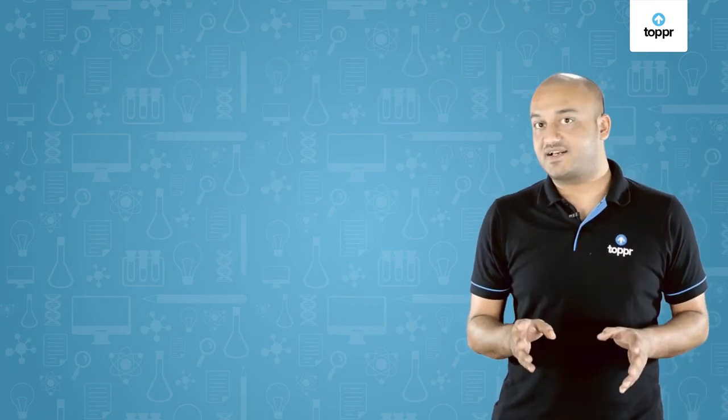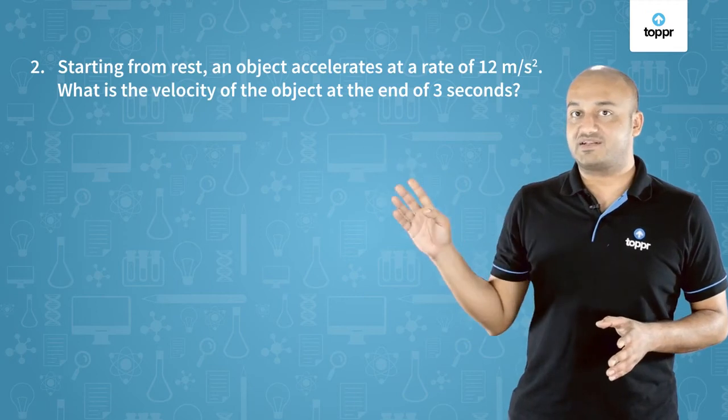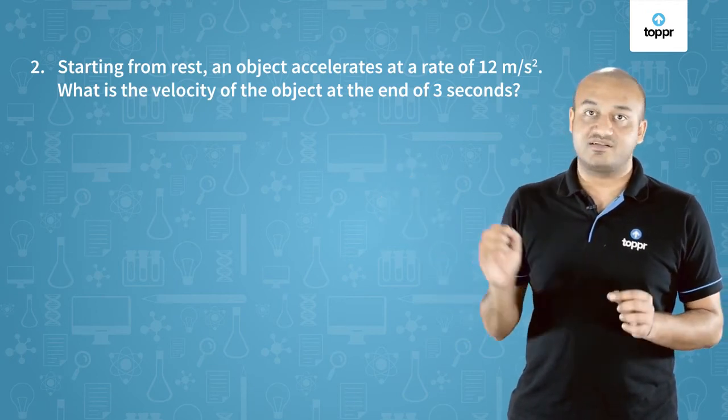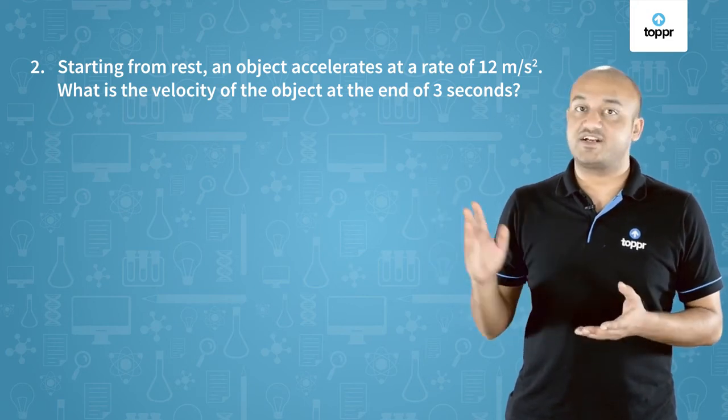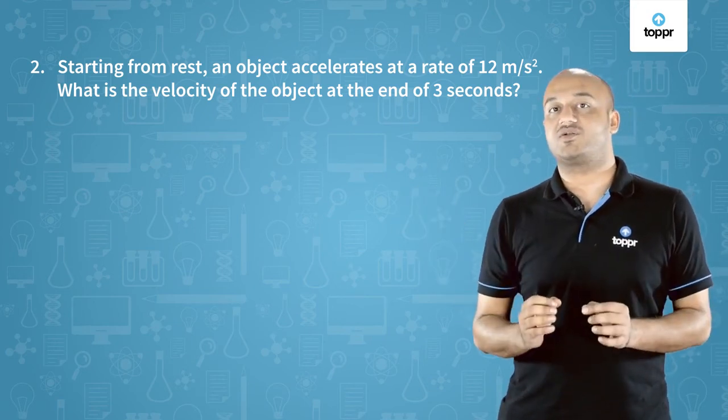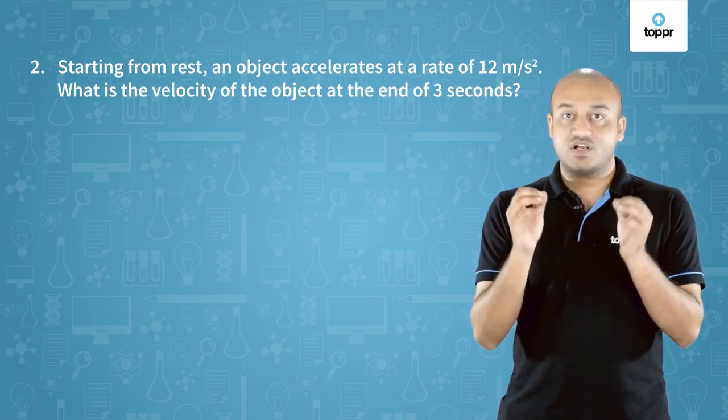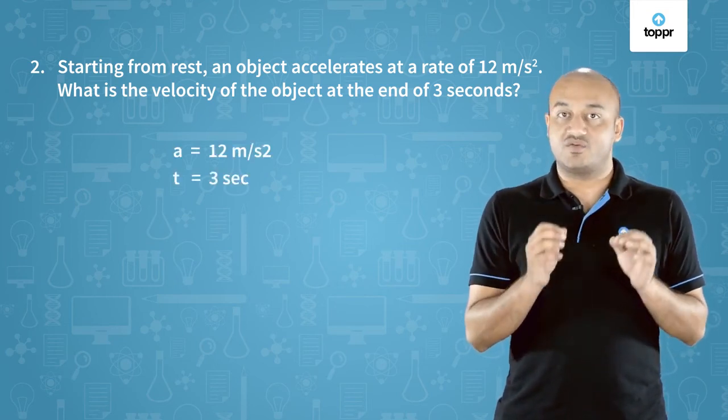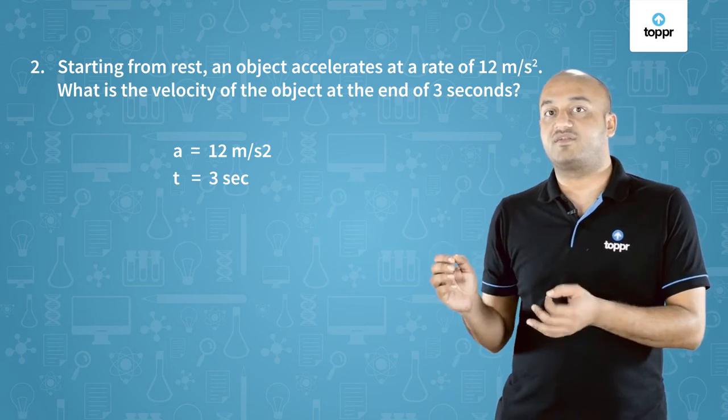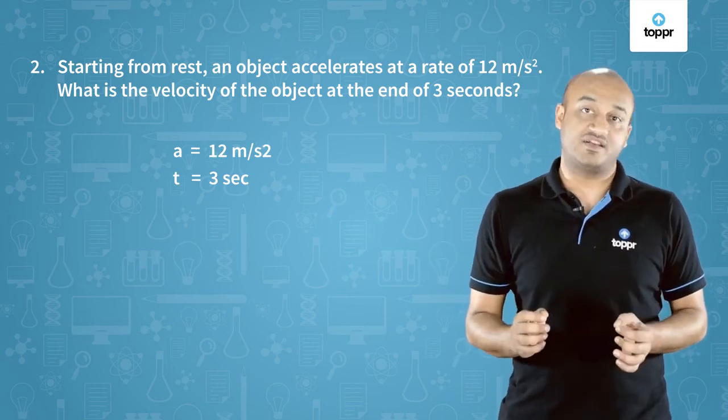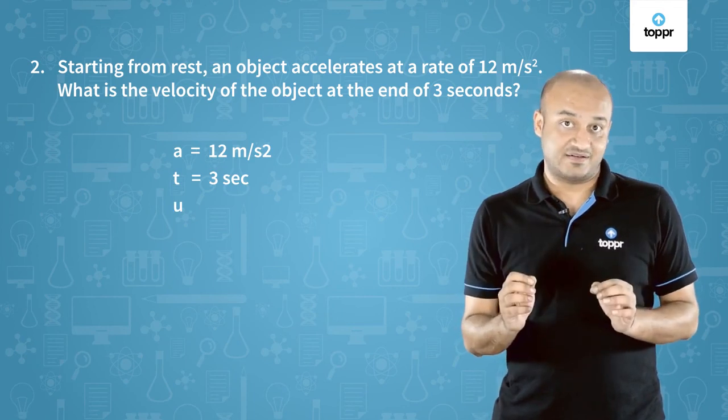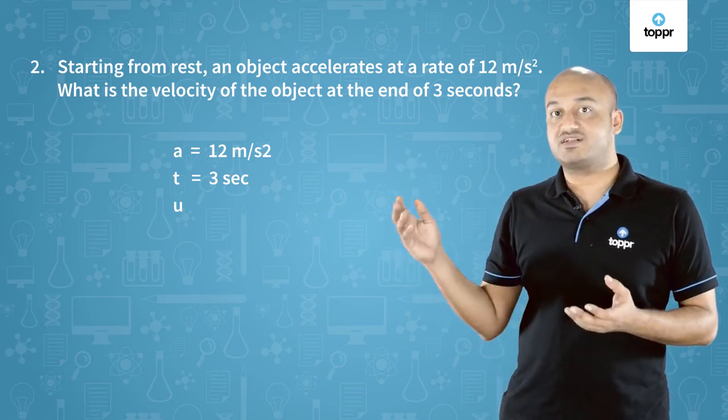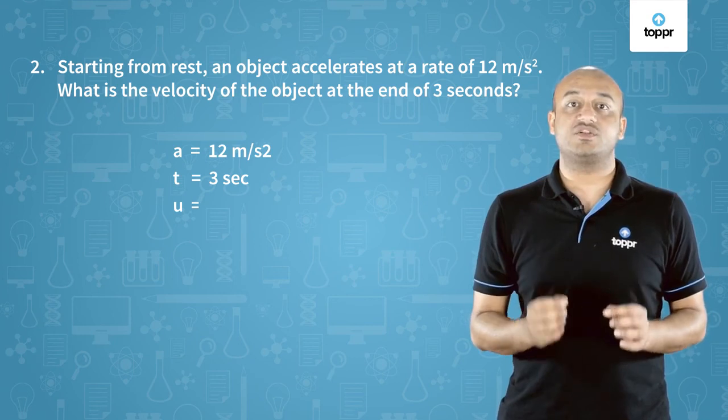Now let's look at another example. A body starts from rest and accelerates with an acceleration of 12 meter per second squared. It accelerates for three seconds and we are expected to find out the final velocity of this object. We are given the value of acceleration and time and we need to find the final velocity v. But do we know u? Yes, because the question mentioned that the body starts from rest, which means the value of u is 0.